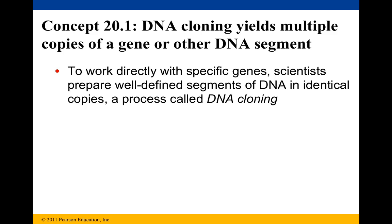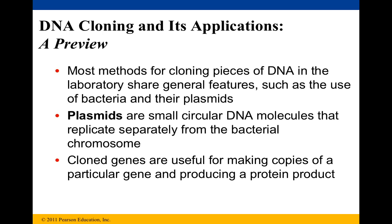To work directly with specific genes, scientists prepare well-defined segments of DNA in identical copies — essentially like a photocopy — and we call that process DNA cloning. Most methods for DNA cloning in the laboratory share general features such as the use of bacteria and their plasmids. Plasmids are small circular DNA molecules that replicate separately from the bacterial chromosome. Cloned genes are useful for making copies of a particular gene and producing a protein product.